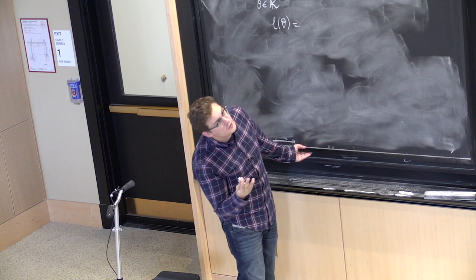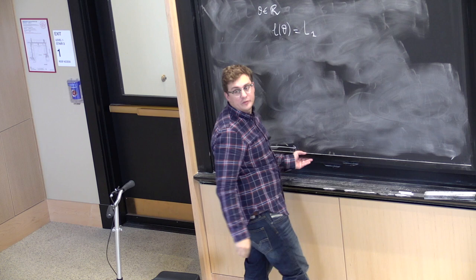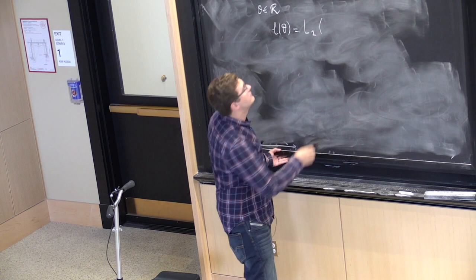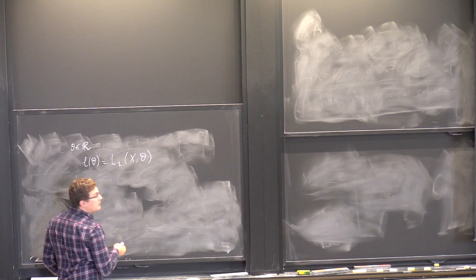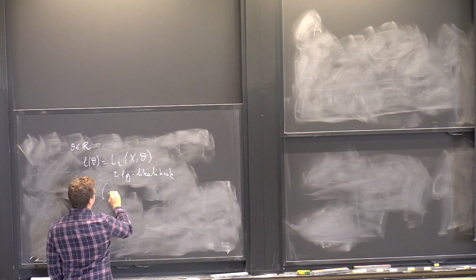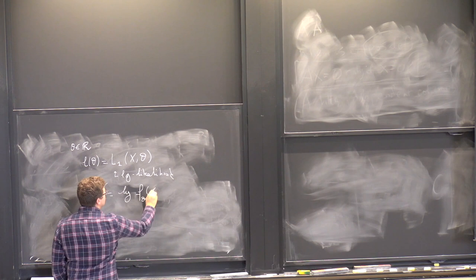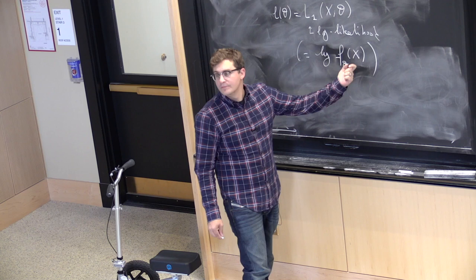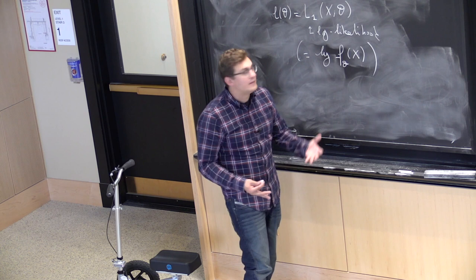The log likelihood here we'll define as L of theta — it's simply the likelihood function for one observation. So for example, if I have a density, it's going to be log of f sub theta of x. This is a random variable because it's a function of a random variable. And that's why you see expectations of this thing — it's a random function of theta.